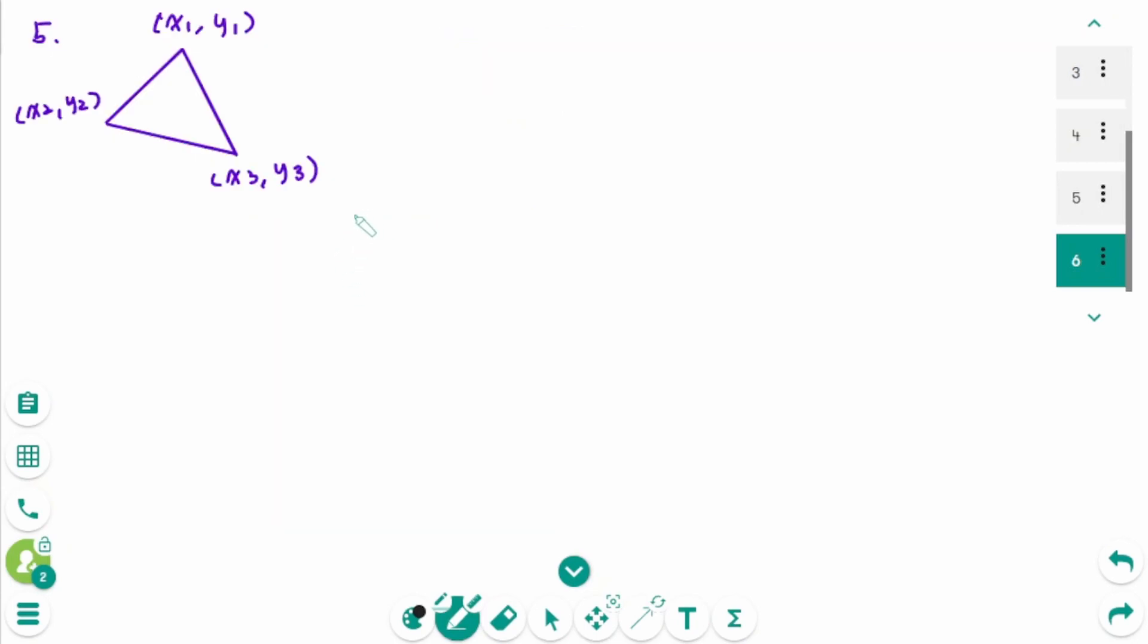This is the last one. The final formula is when the three vertices of the triangle are known. Area equals 1 over 2 times, open the absolute value sign, then X1, Y1, X1, Y1, X2, Y2, X2, Y2, X3, Y3, X3, Y3, then X1, Y1 again, X1, Y1.